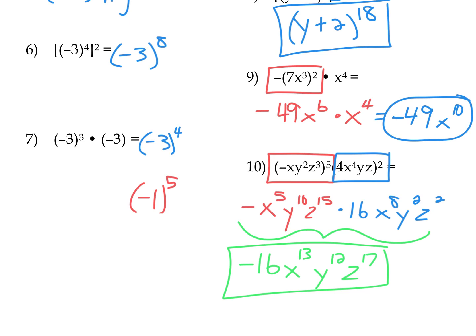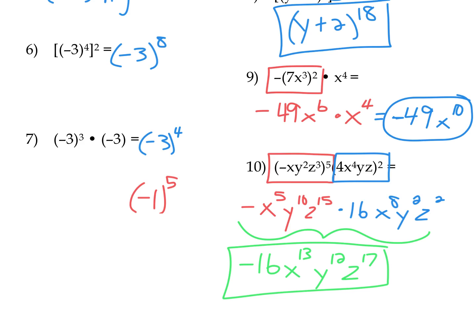Take it one step at a time. When multiplying like bases, add their exponents. When you have a power raised to another power, multiply those powers together. When you have a product, everything in the product in parentheses is raised to that power. Pay attention to parentheses, especially when you have a negative number raised to a power. Practice these three properties of exponents involving products.